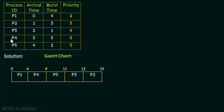P3 gets the CPU when P5 releases it at 11 milliseconds, and it will execute for just 1 millisecond — its burst time. So from 11 to 12 milliseconds, P3 executes. Then the final process is P2. P2 gets the CPU after P3 releases it at 12 milliseconds, and P2 will execute for 3 milliseconds — its burst time. So 12 plus 3 is 15; up to the 15th millisecond, P2 uses the CPU, and at this point all processes have completed their execution.